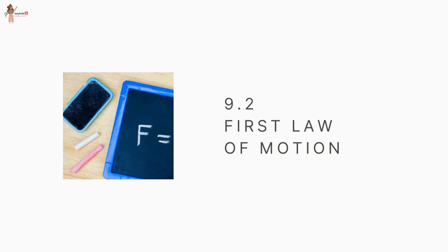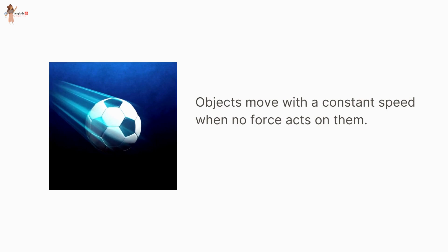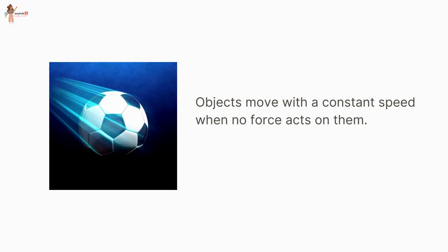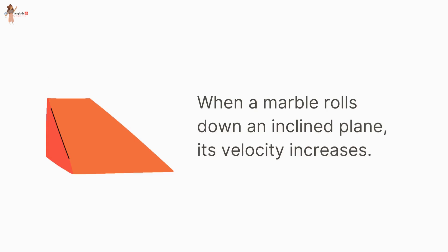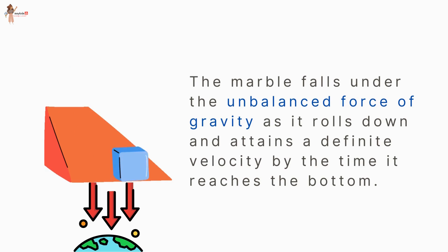Let's see the First Law of Motion. By observing the motion of objects on an inclined plane, Galileo deduced that objects move with a constant speed when no force acts on them. He observed that when a marble rolls down an inclined plane, its velocity increases. The marble falls under the unbalanced force of gravity as it rolls down and attains a definite velocity by the time it reaches the bottom.